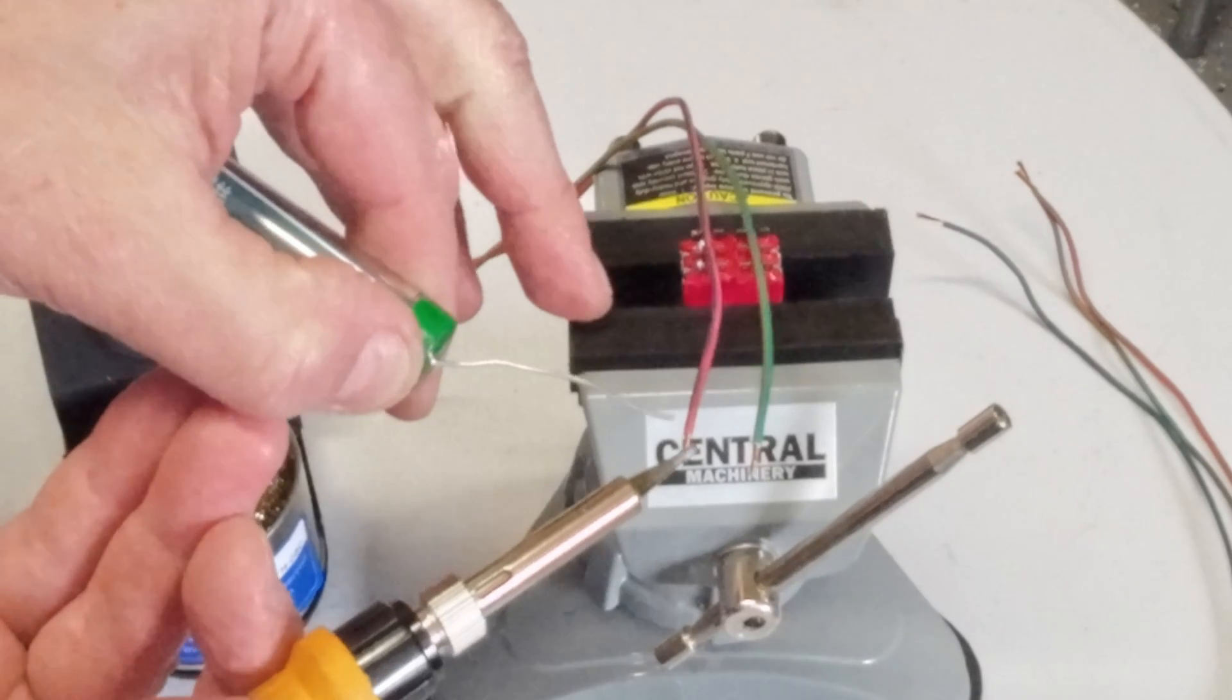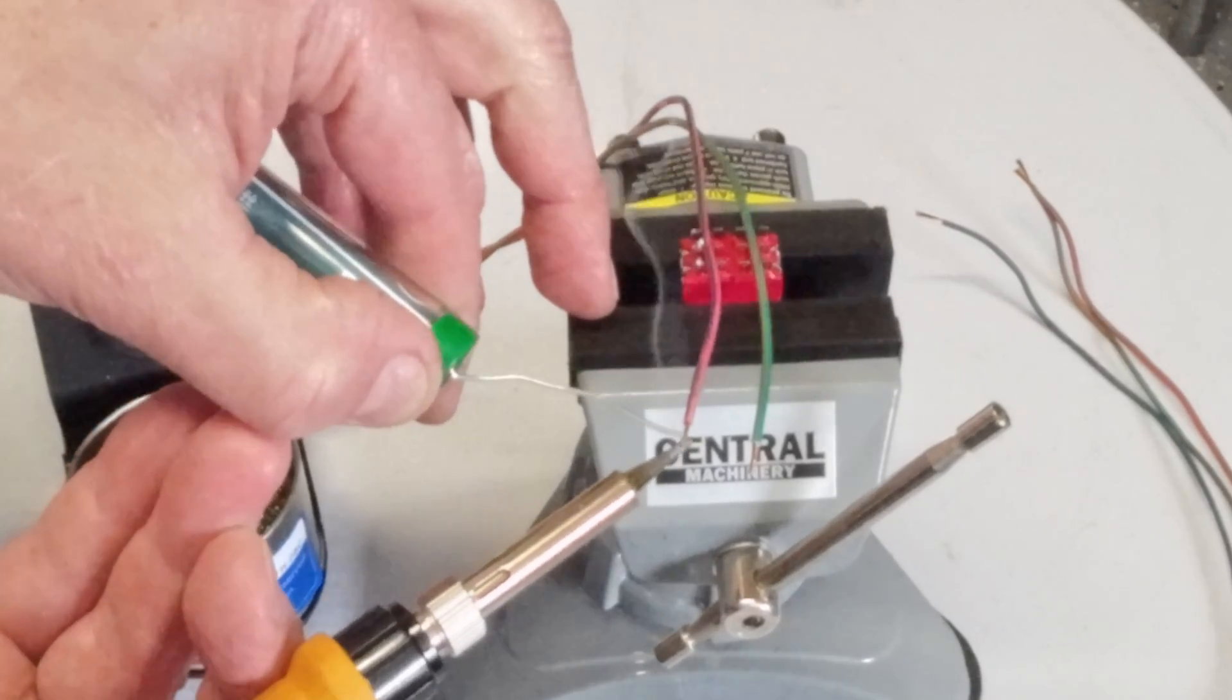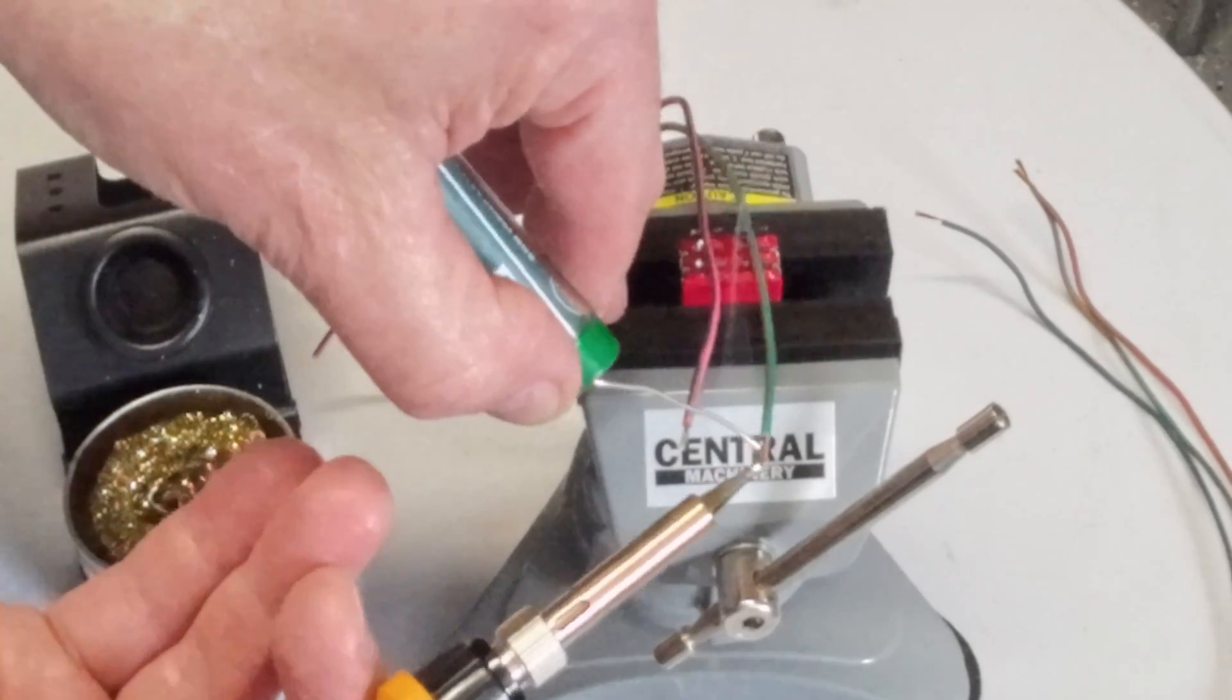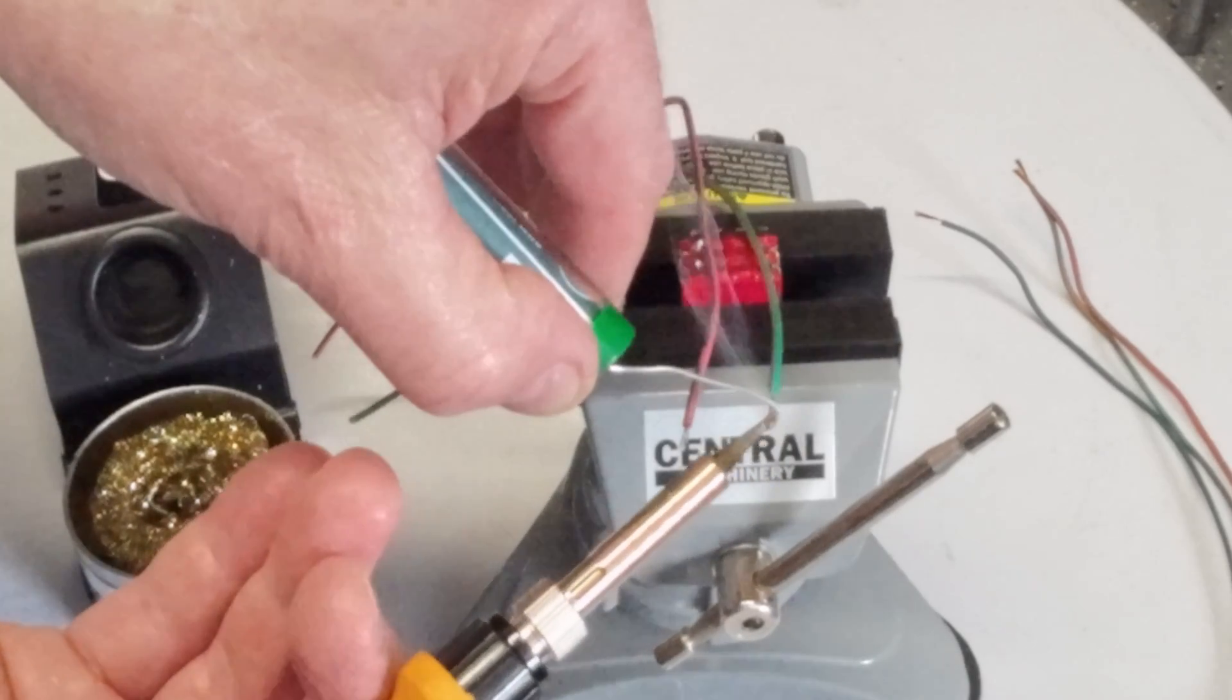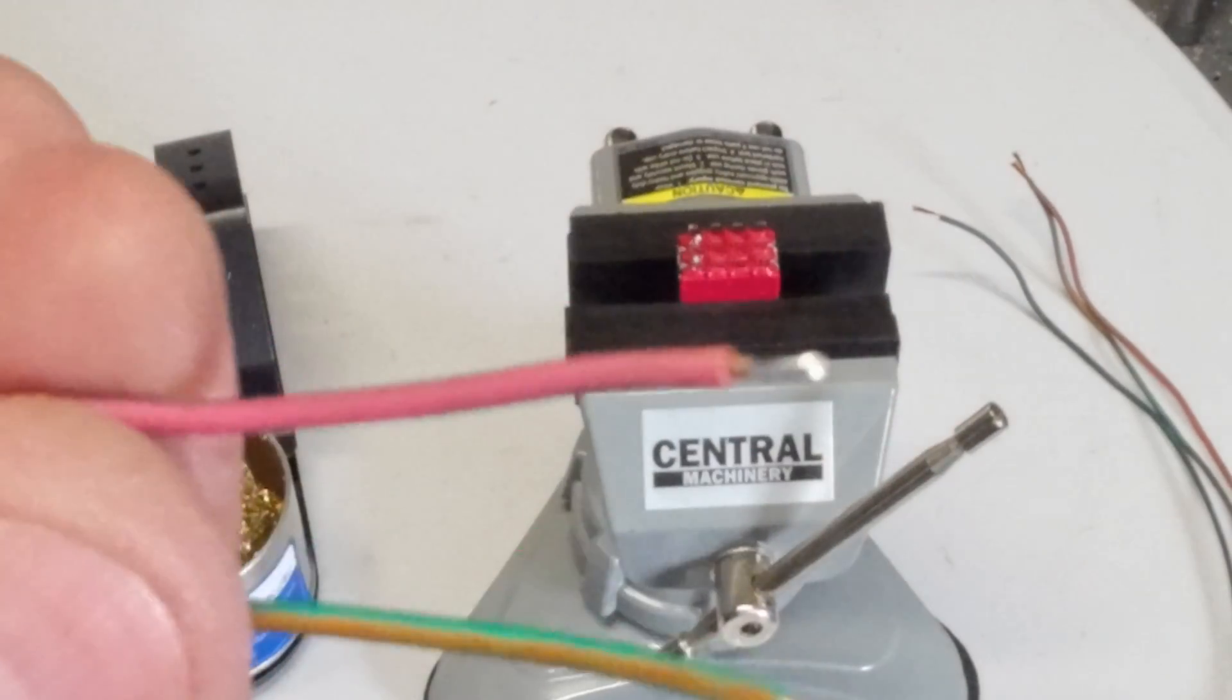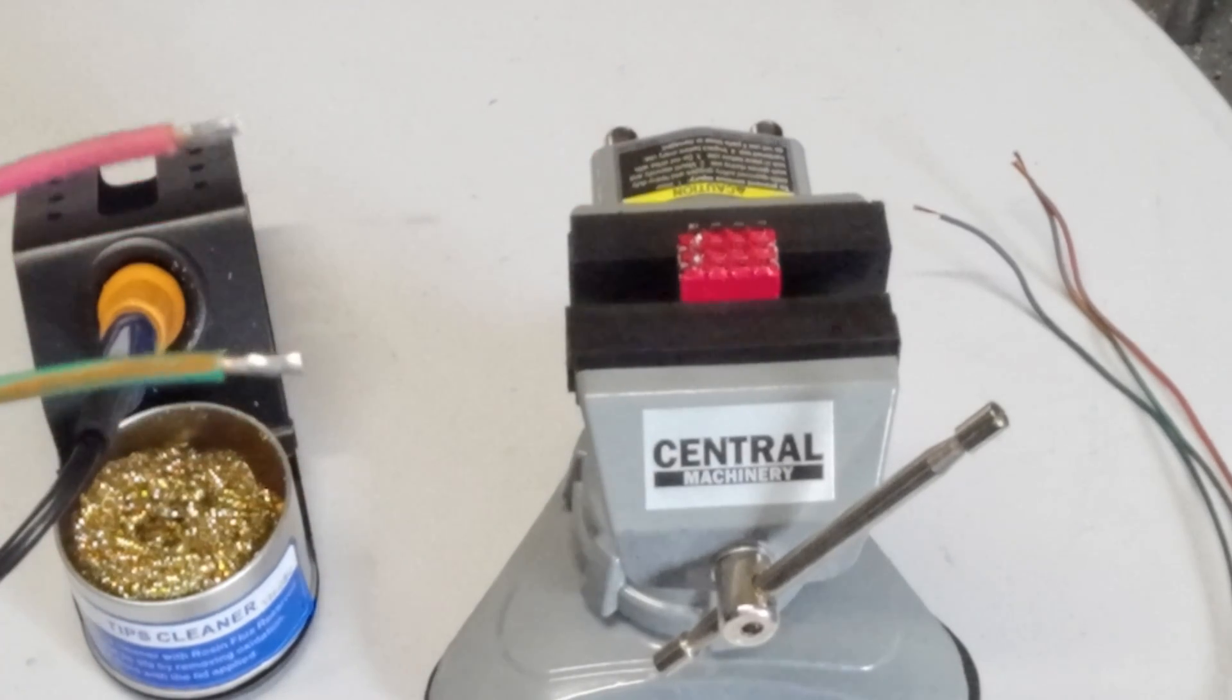It helps to wet the solder tip. Then I'm going to place this on the wire. When you have a little bit of solder on the tip, it helps heat up the wire. If we can hold it steady—okay, there we go. Now I've got tinned wires.